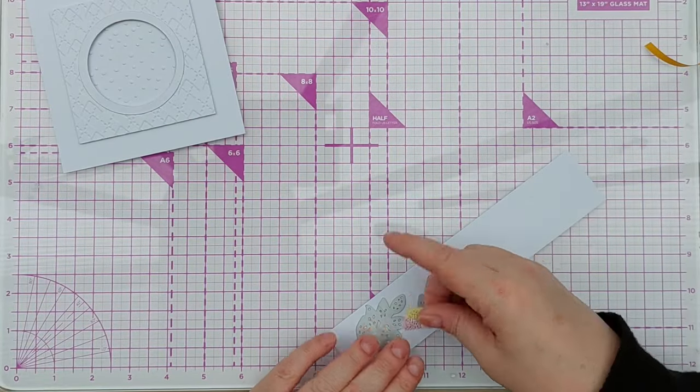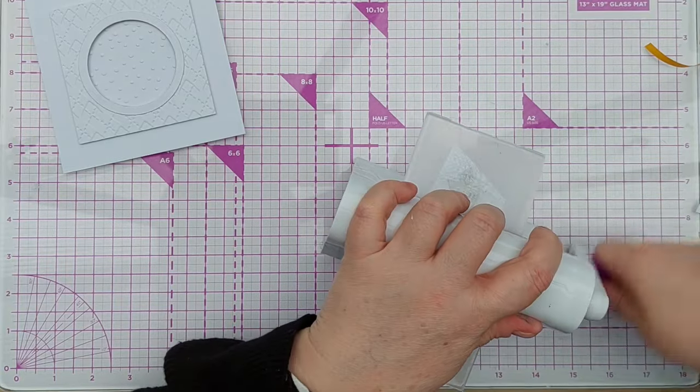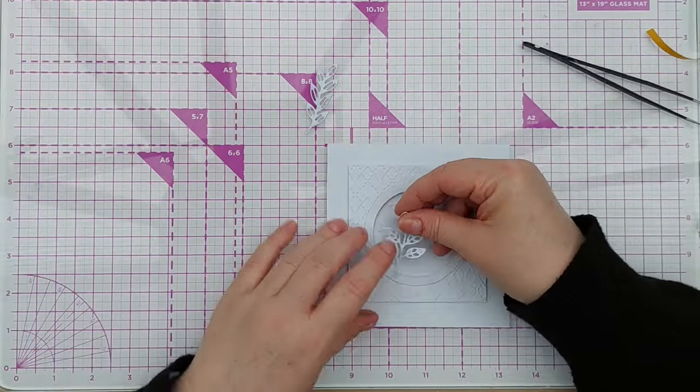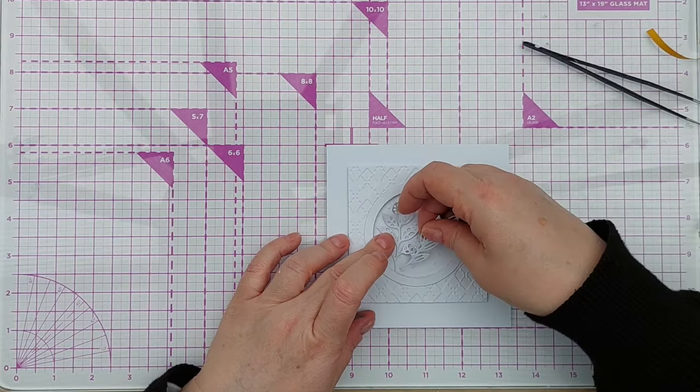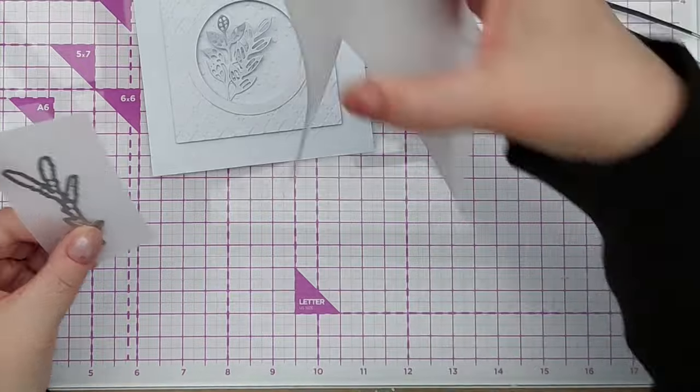To embellish the aperture I die cut some leafy branches from smooth white cardstock and vellum, and then added them to the left side of the circle with the vellum at the back. I think the vellum adds a lovely softness and floatiness.